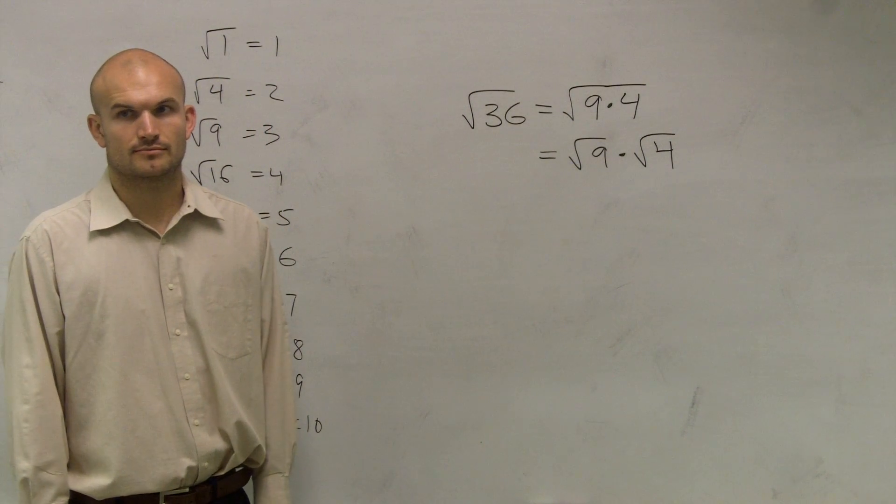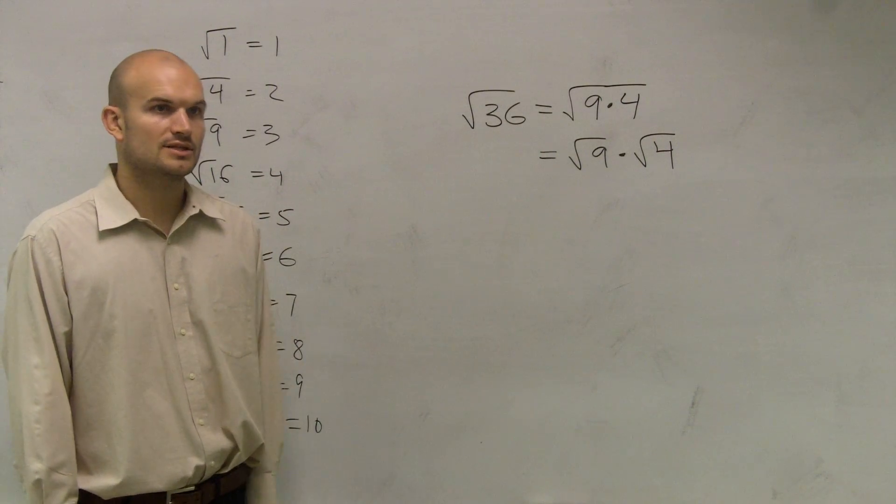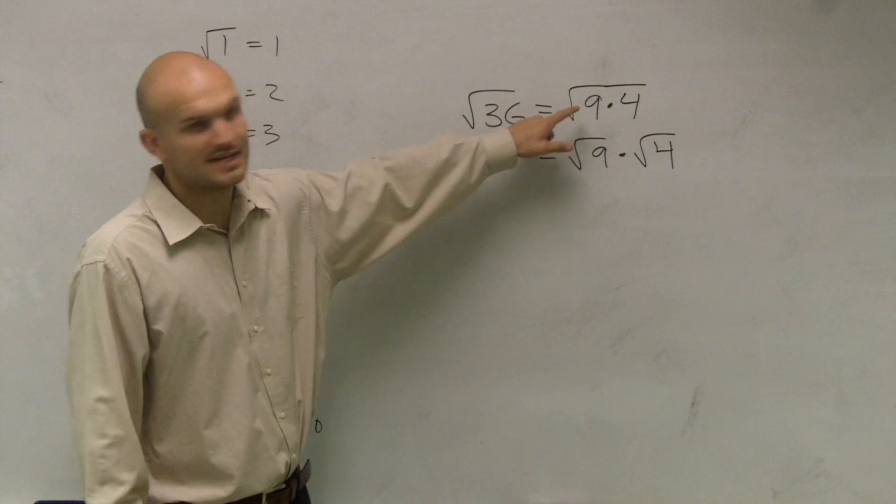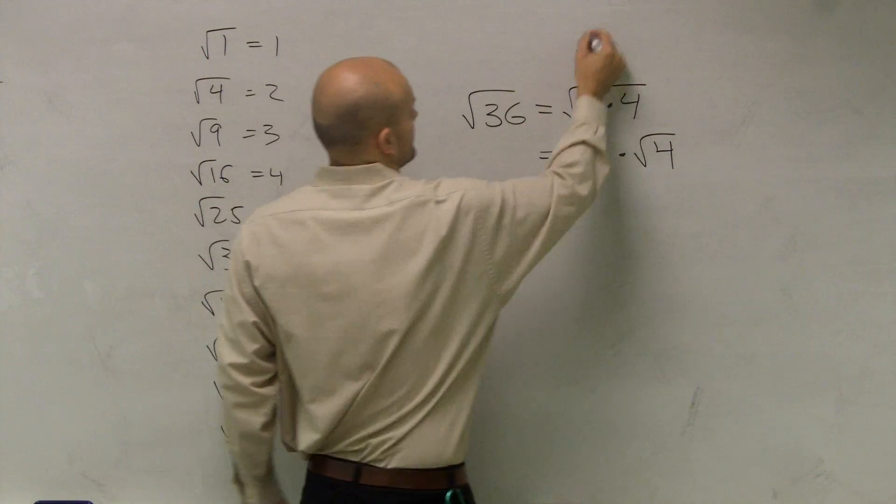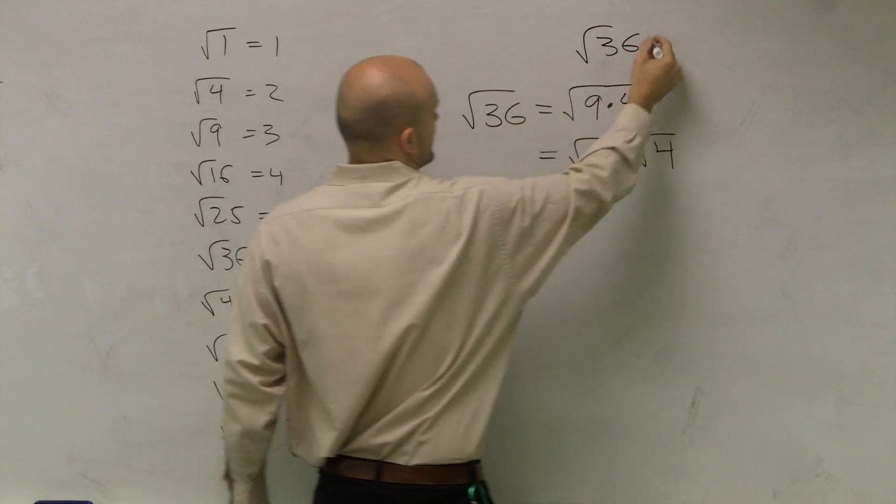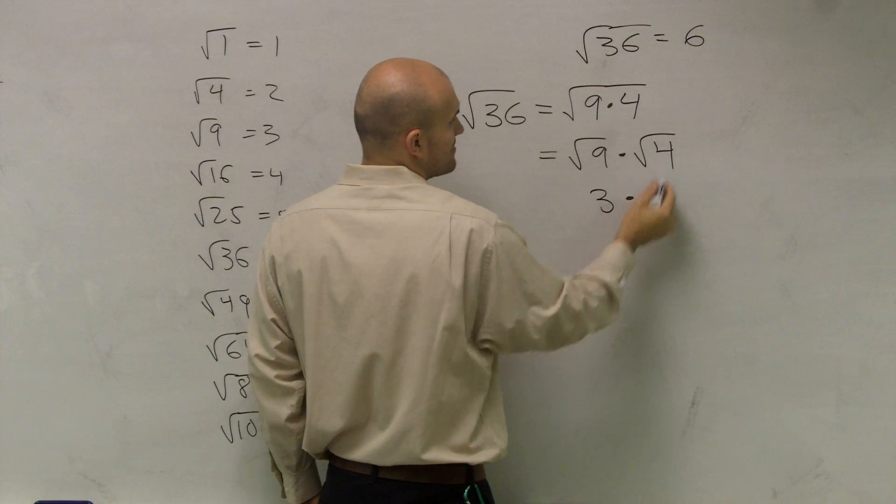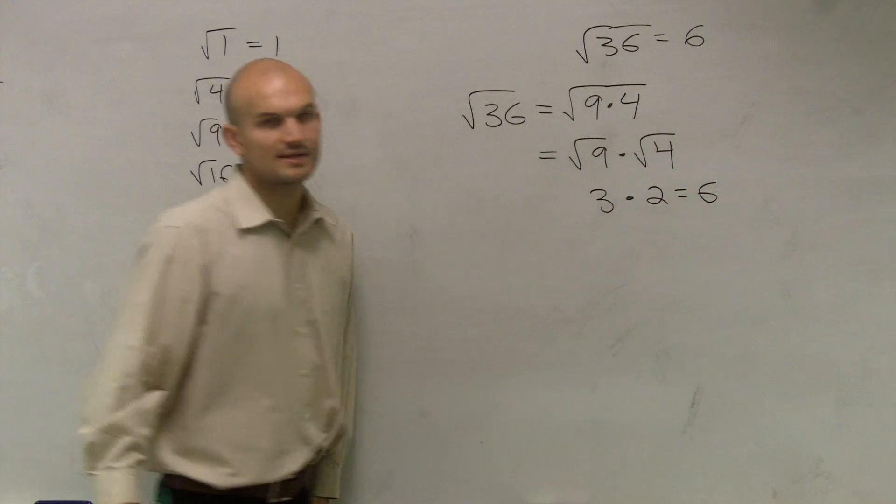They're equal to each other. All right? Now, let's check out and see if it works. What's the square root of 9? We already know this answer's 6, right? So you know the answer's 6. So you have 3 times 2, which equals 6.